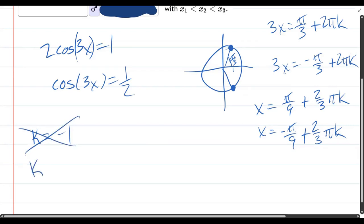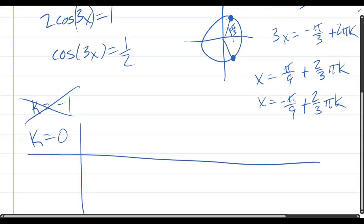We got k equals 0. Let's rewrite these. x equals pi over 9, plus 2 pi over 3k. x equals negative pi over 9, plus 2 pi over 3k.